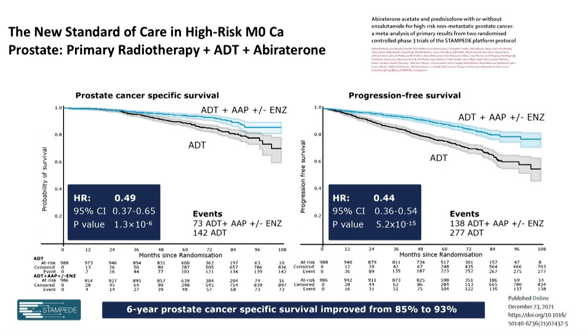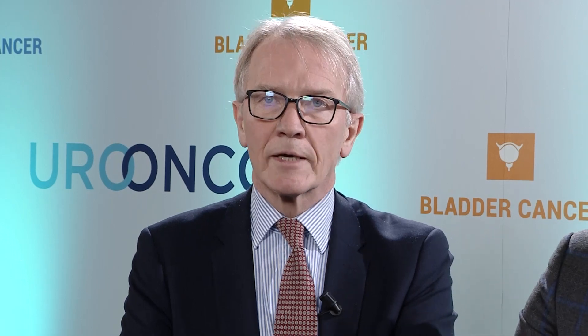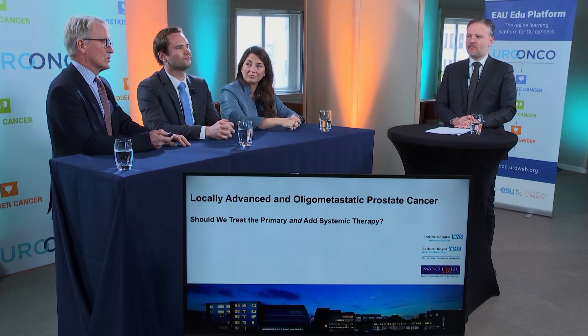When asked whether to use abiraterone alone or the combination, we found the combination was much more toxic — predominantly with hypertension — and there was no real added benefit to adding both novel hormone agents. So the future standard of care for patients with high-risk clinically localised disease, on the basis of standard imaging, is ADT, radiotherapy to the primary plus nodes, and a novel hormone agent in the form of abiraterone. Enzalutamide will likely work in just the same way.